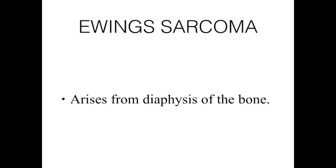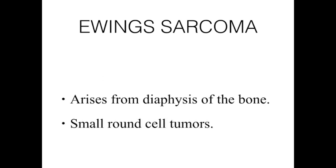When I think about Ewing Sarcoma, the one thing I remember is that this is a malignant tumor that arises from the diaphysis of the bone. It comes under the classification of small round cell tumors, which have small round cells with increased nuclear and cytoplasmic ratio.